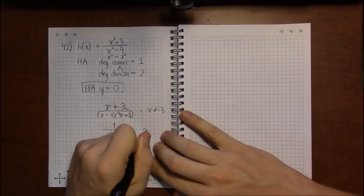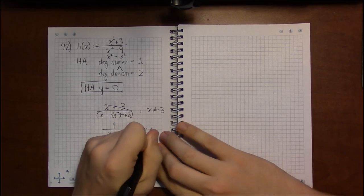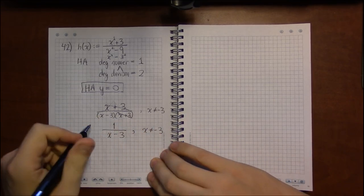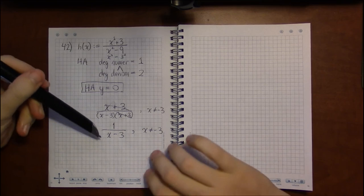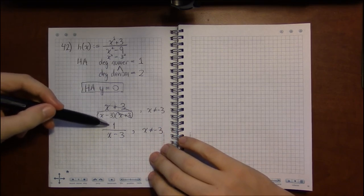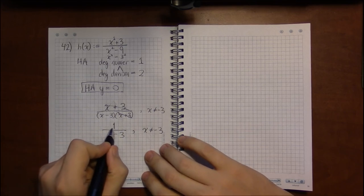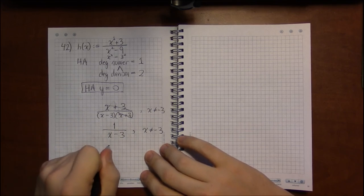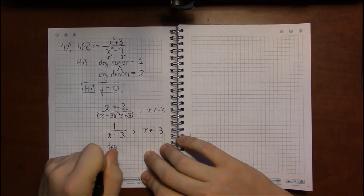And we get the function 1 over x minus 3. Now I said that this has no effect on our answer. And in this case, rarely enough, I am correct. You can go through.